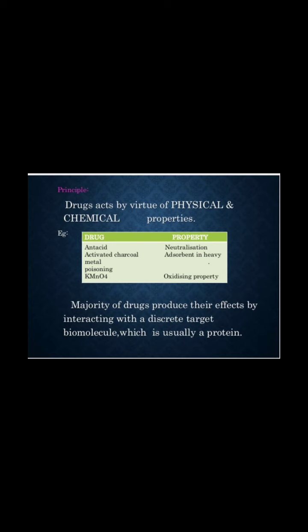If we look at the principle of drug action, drugs may act by virtue of physical and chemical properties. For example, antacid — its mechanism of action is by neutralization of the excess acid produced. Next is activated charcoal, which is an absorbent and is used in heavy metal poisoning. Next is potassium permanganate, which has an oxidizing property.